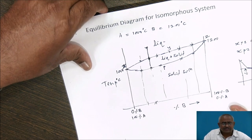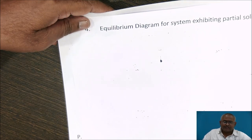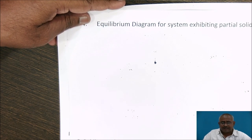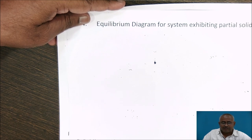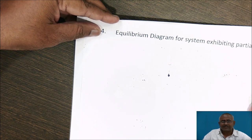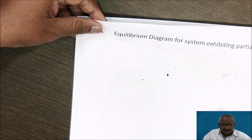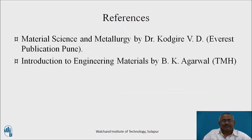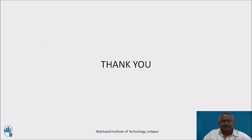Another system we are going to consider is the equilibrium diagram for a system exhibiting partial solid solubility. But due to lack of time, we are unable to discuss this during this session — we may discuss it in a future session. For further reference, I recommend the book by Dr. V.D. Kodgire, Material Science and Metallurgy, and the book by Mr. B.K. Agarwal, Introduction to Engineering Materials. Thank you, friends.